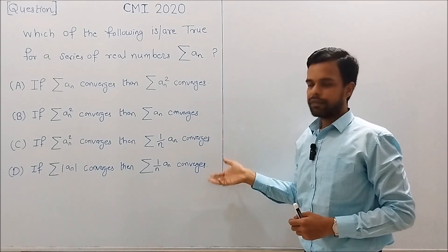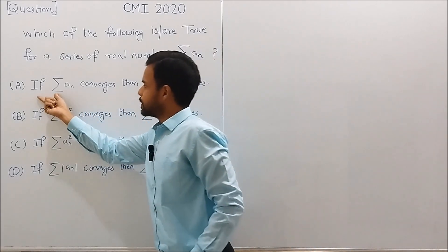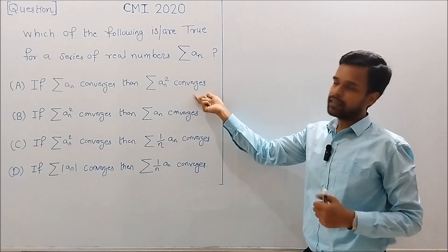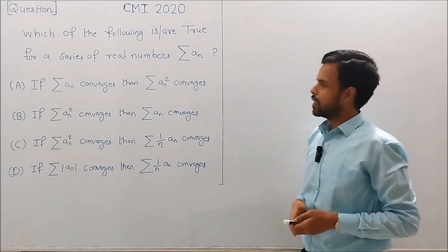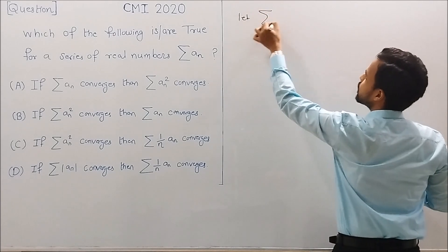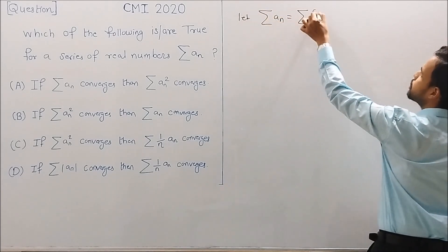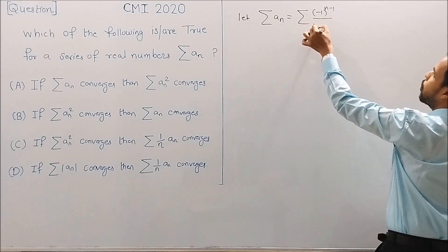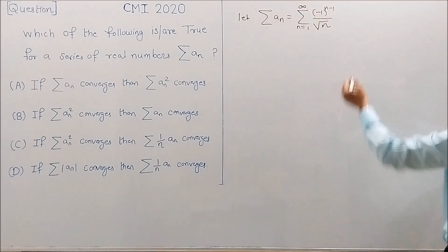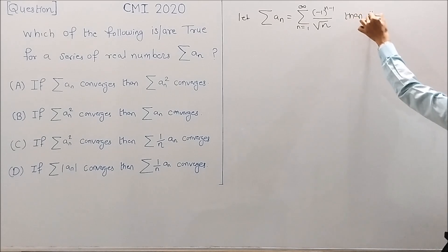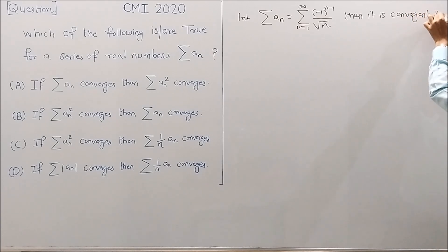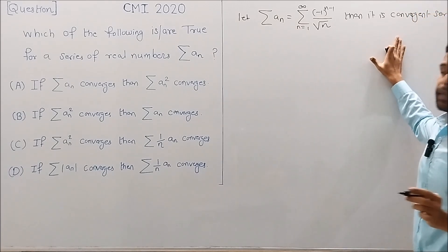We will examine each statement one by one. Statement A is: if series An converges, then series An squared converges. This is a false statement. To see it, let series An be the series of minus 1 to the power n minus 1 over root n, where n varies from 1 to infinity. Then it is a convergent series.